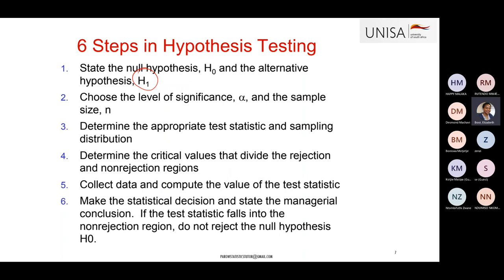Step two: identify the facts given — the level of significance (alpha), sample size, proportions, or standard deviations. Step three: state whether you're doing a Z test or T test. Use a Z test for proportions, or for the mean when the population standard deviation is known. Use a T test when the population standard deviation is unknown.